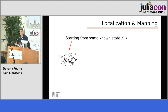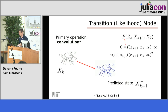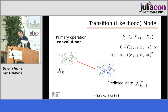Imagine some system that has state variables you're interested in — maybe a robot and its position in the world. We are interested in estimating, based on some kind of sensor input, what these state variables are. Something changes — maybe over time — and we'd like to mathematically model the interaction between state variables, maybe xk and xk+1, in a rigorous and probabilistic way.